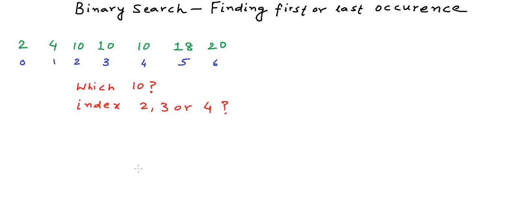The normal binary search implementation we saw previously exits as soon as it finds any occurrence of a number in the array, so there is no guarantee that we will find the first occurrence or the last occurrence. In this lesson we will see two different variations of binary search — one will always give us the first occurrence, and another will always give us the last occurrence of the number we are searching for.